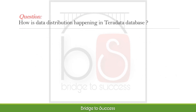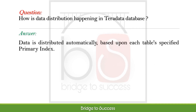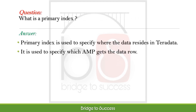How is data distribution happening in Teradata database? Data is distributed automatically based upon each table's specified primary index. What is a primary index? Primary index is used to specify where the data resides in Teradata. It is used to specify which AMP gets the data row.